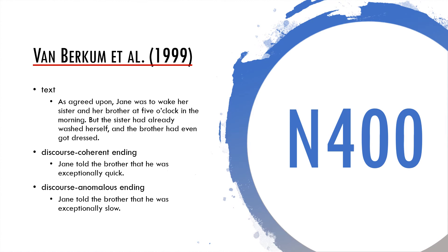Participants listened to short stories such as: As agreed upon, Jane was to wake her sister and her brother at 5 o'clock in the morning. But the sister had already washed herself and the brother had even got dressed. The last sentence in the story contained either a word which was semantically anomalous given the previous context, or not. An example of a discourse coherent ending is the sentence: Jane told the brother that he was exceptionally fast. An example of a discourse anomalous ending is: Jane told the brother that he was exceptionally slow. Importantly, these sentences are perfectly fine when presented in isolation. The only reason why these sentences would be processed differently is the previous discourse.